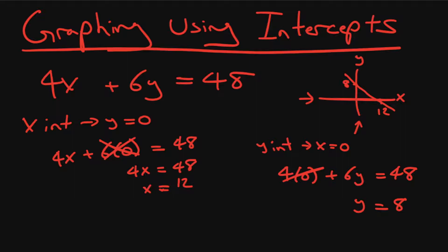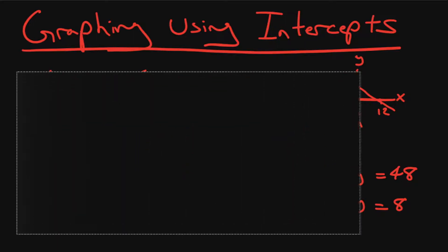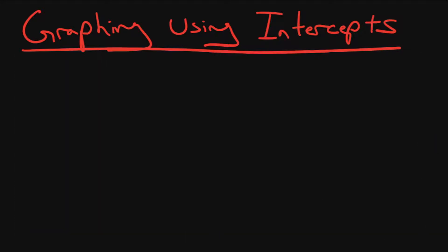So that is one way to plot using intercepts from a line. And then we can also do another one. Let's say we have 2x minus y equals 7.